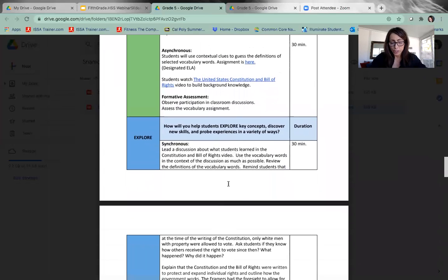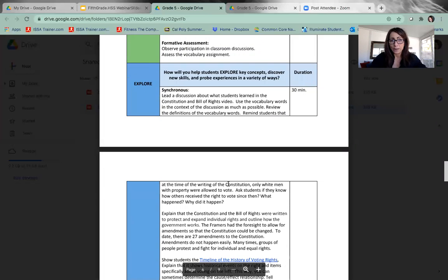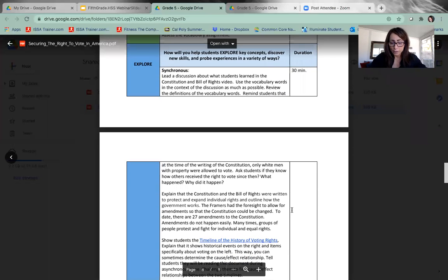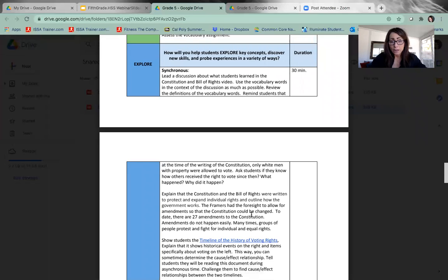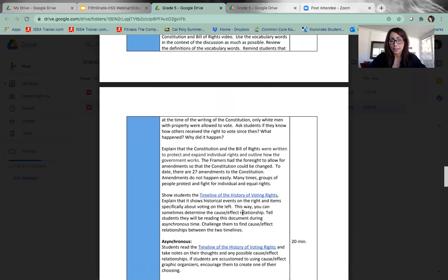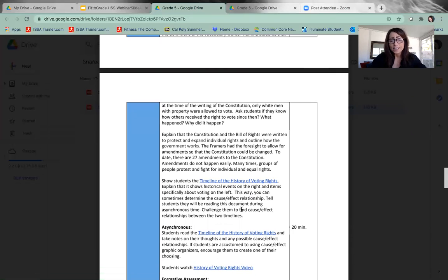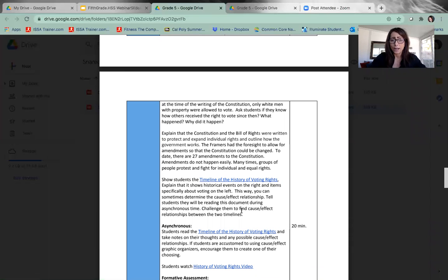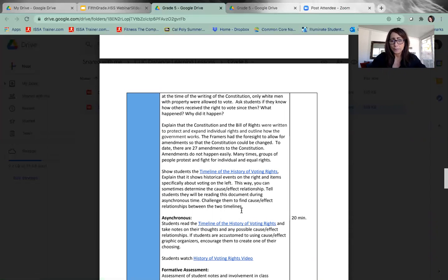In the explore portion we are giving background now. So in this section we're giving background to the students, we're reviewing the video and then we take a look at a timeline of the history of voting rights which is linked right here. What we do with students during synchronous time is read over the timeline, look at it together, and try to look for cause and effect relationships. You'll guide your students through that in virtual class time, like actual class time, through zoom or google meets or whatever platform you use, but helping students get through that, helping them read it, make sense of it, and looking for those cause and effect relationships.